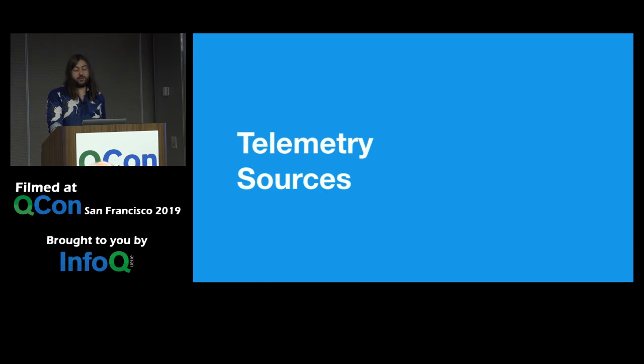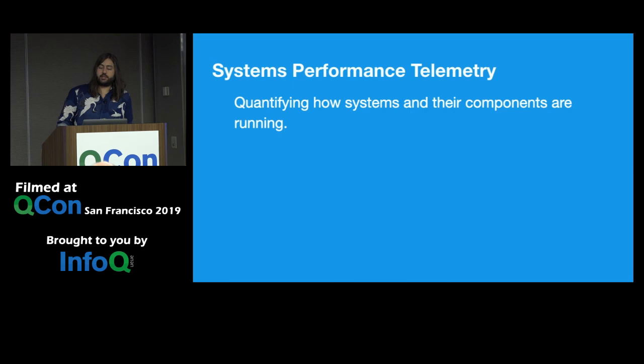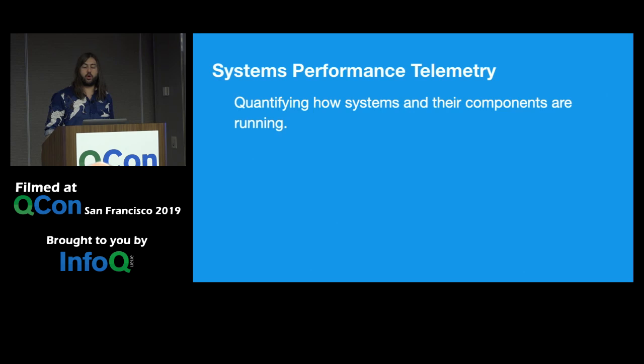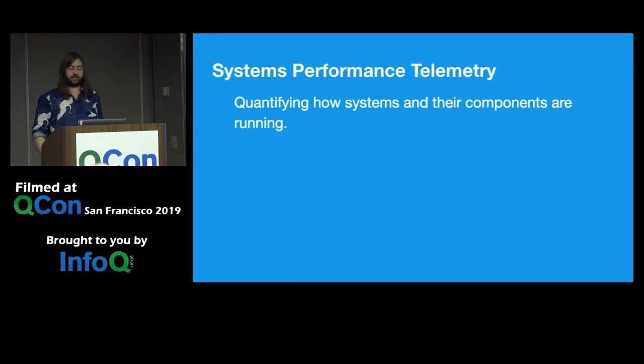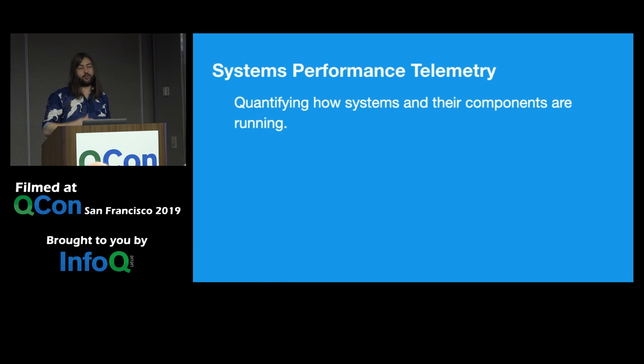Let's begin by talking about various telemetry sources. What do we even mean by telemetry? Telemetry is the process of recording and transmitting readings of an instrument. With systems performance telemetry, we look to add instrumentation that helps us quantify runtime characteristics of our workload and the amount of resource it takes to execute. Essentially, we're trying to quantify what our systems are doing and how well they are doing it. By understanding these aspects of performance, we're then able to optimize for increased performance and efficiency. If you can't measure it, you can't improve it.